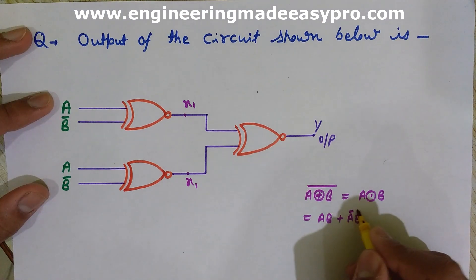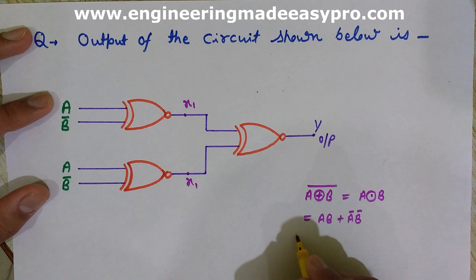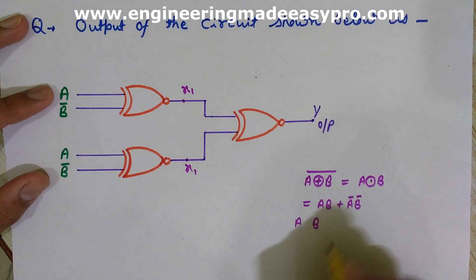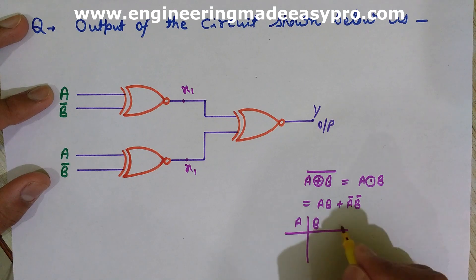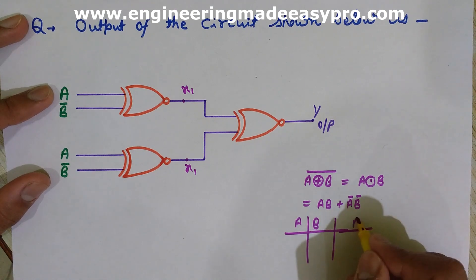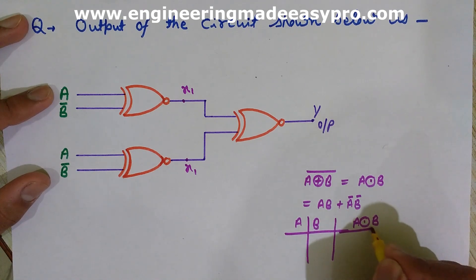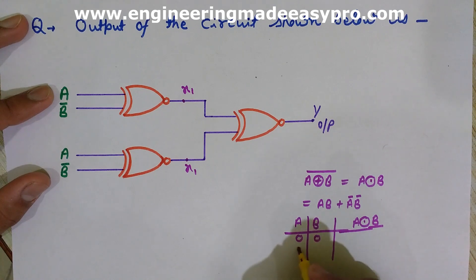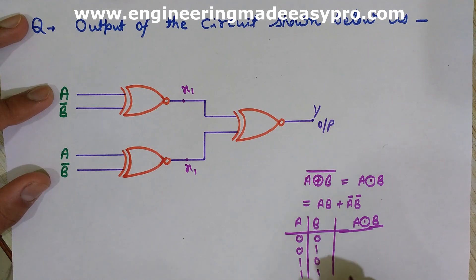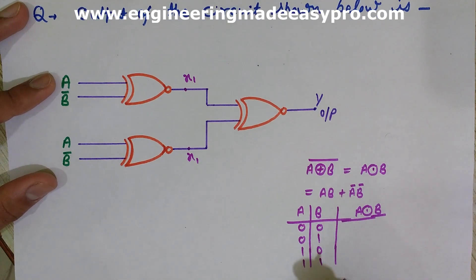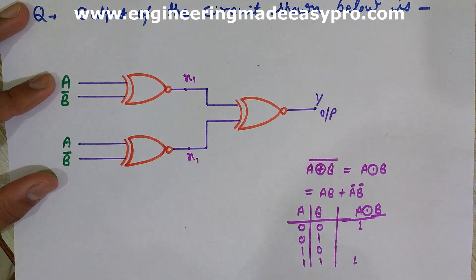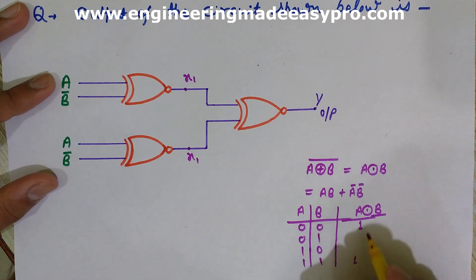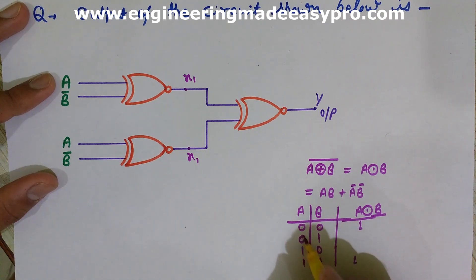For a two-input XNOR gate with inputs A and B, the truth table has four combinations: 0,0 → 1; 0,1 → 0; 1,0 → 0; 1,1 → 1. The output is 1 when both inputs are the same, and 0 when the inputs are opposite.